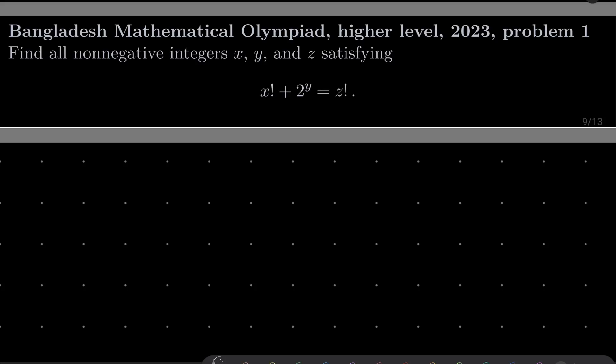Hello friends, in this video I'd like to solve the following problem from the Bangladesh Mathematical Olympiad, higher level, for students of higher classes of high school in Bangladesh, if I am not mistaken, 2023, problem number 1. We wish to find all non-negative integers x, y, and z satisfying this Diophantine equation: x factorial plus 2 to the power of y equals z factorial.